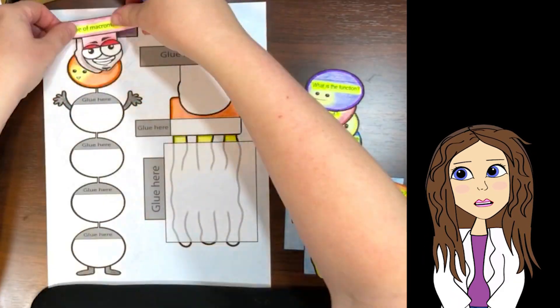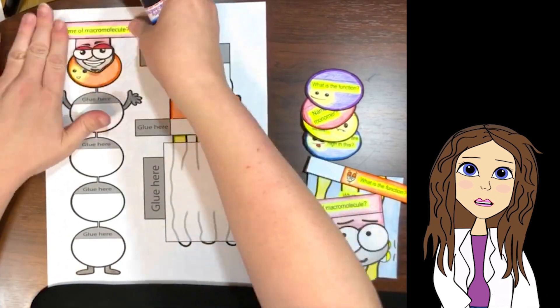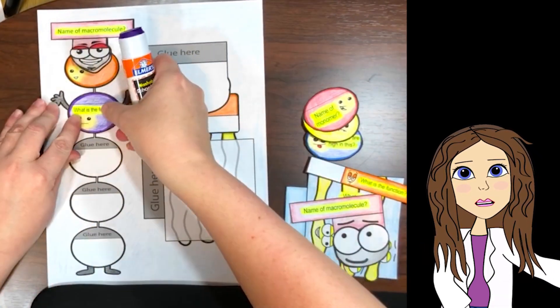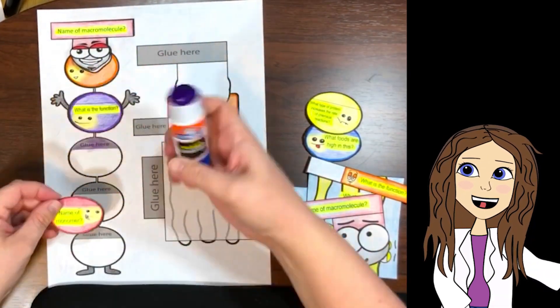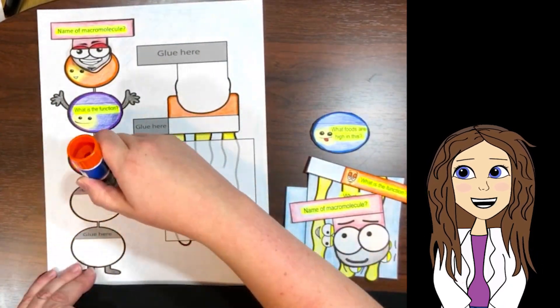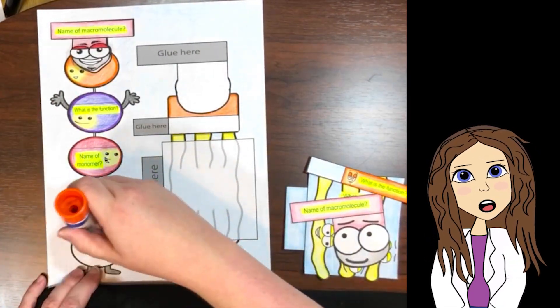The cutout pieces, or flaps, has questions on them, so students are lifting the flaps to answer the questions. Now, if you have Microsoft Word, you can edit these questions to fit your classroom's needs.